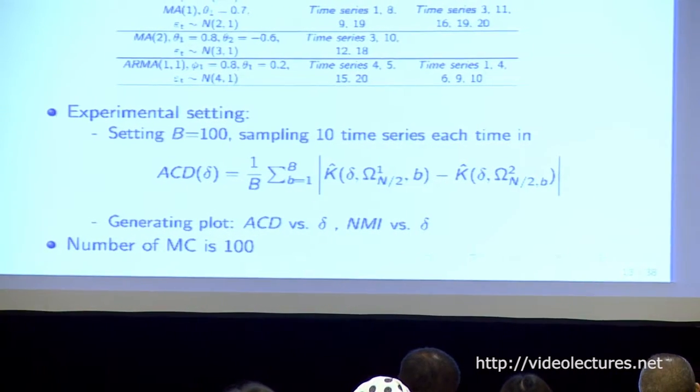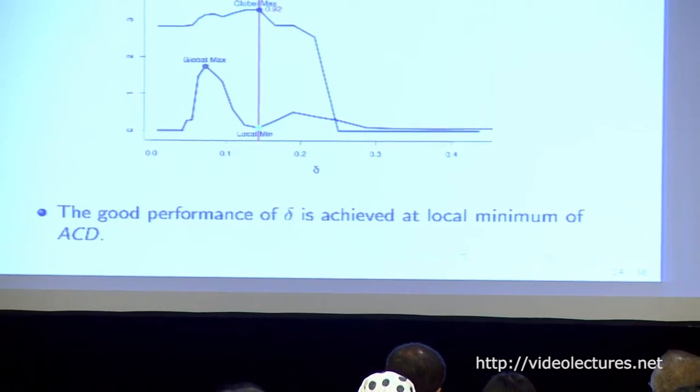Here is a Monte Carlo simulation study. We simulated 20 time series, and the structure of the time series is shown in a table. We calculate ACD and NMI for a set of delta values, put them into one graph, and explore the hidden pattern. We repeat these experiments 100 times. In one realization, the black curve corresponds to clustering stability and the blue curve corresponds to clustering accuracy. We want to choose the delta corresponding to the right vertical line, which delivers the best clustering accuracy in the simulation, and we want our selected delta to be near this line.